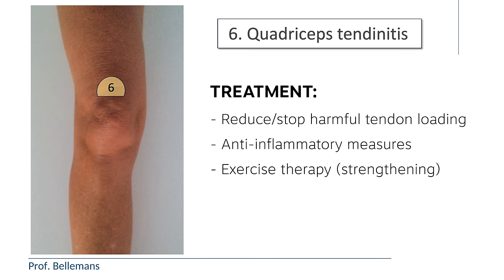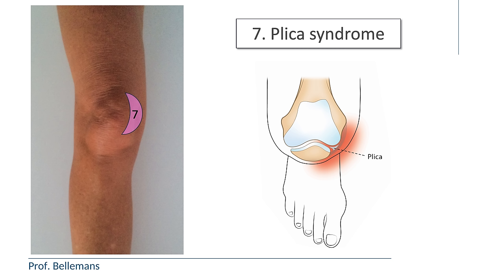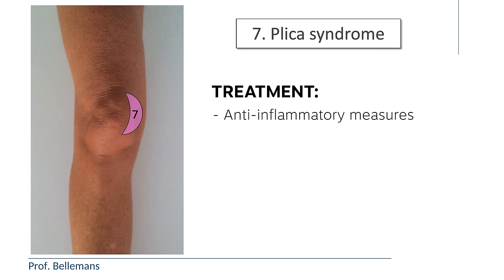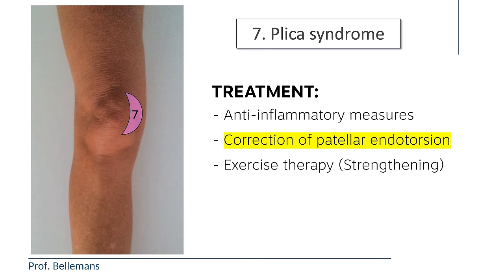7. Plica syndrome. In plica syndrome, there is inflammation of the soft tissues located at the medial or inner side of the kneecap. This is a particularly sensitive area of the knee, so this condition is quite common. The treatment consists of anti-inflammatory measures, correction of patellar endotorsion, and specific strengthening exercises.